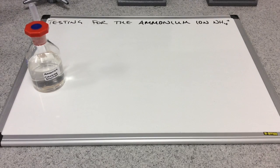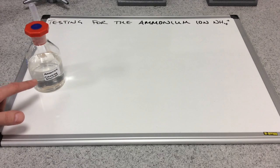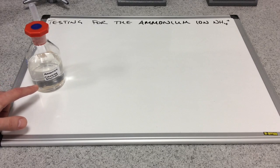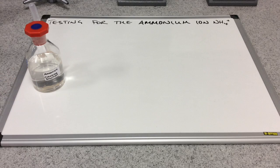In this video I'm going to look at how to test for the ammonium ion. In the bottle I've got some ammonium chloride solution, and obviously contained within that is the NH4+ ammonium ion.